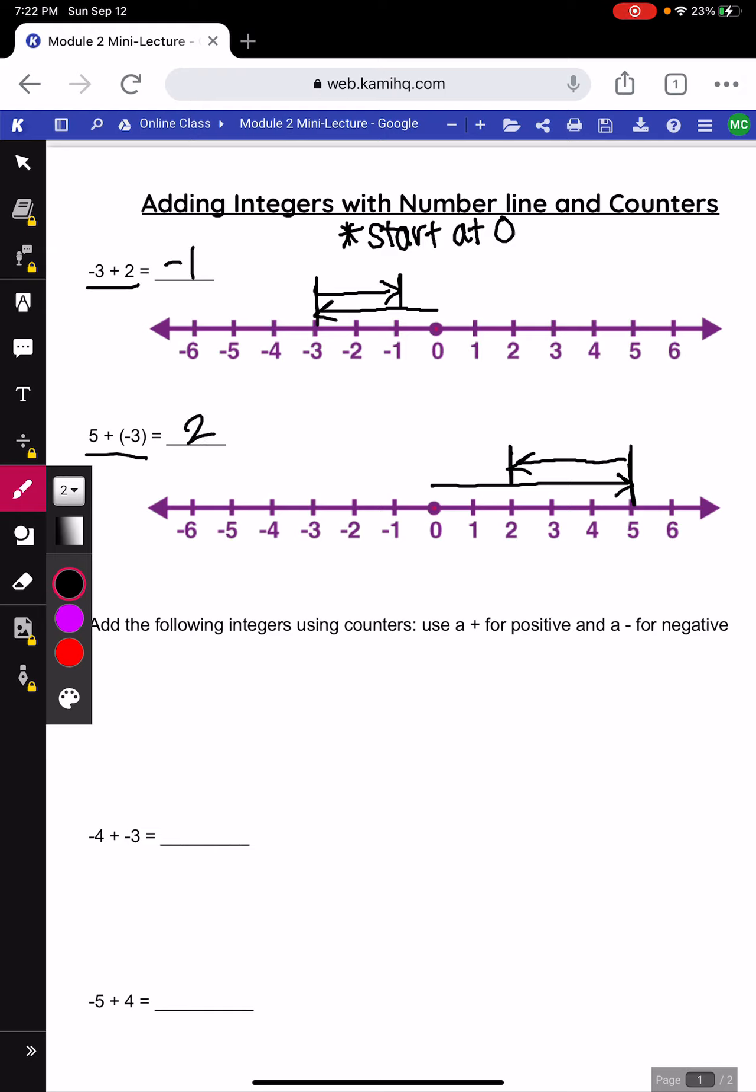Alright, that is how you can do it with your number line. Make sure you're showing both the arrows always starting at 0. Now we are going to look at how we can do this with counters. For our counters I am going to use a green plus for a positive 1 and a red negative for a negative 1.